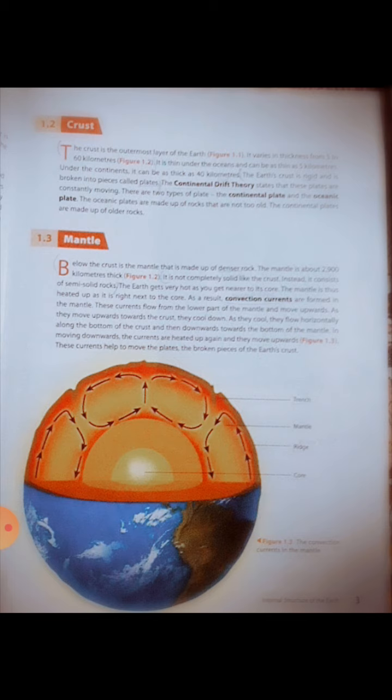The earth's crust is rigid and broken into pieces called plates. The continental drift theory states that these plates are constantly moving. There are two types of plates: the continental plate and the oceanic plate.